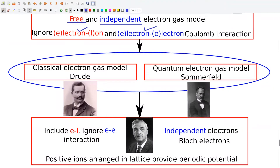The electron gas model can be solved using classical as well as quantum theory. The classical electron gas model was proposed by Drude, and the quantum electron gas model was proposed by Sommerfeld. Electron gas models provide a good explanation for most of the electronic properties of metals, other than a few like the anomalous Hall coefficient for certain metals.